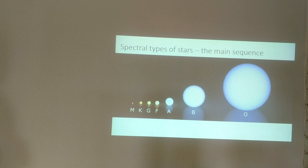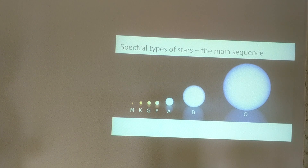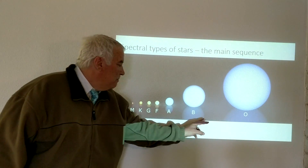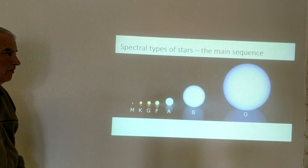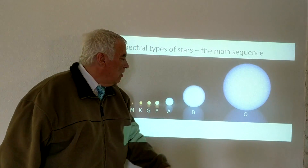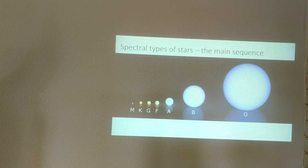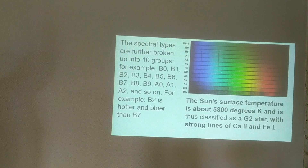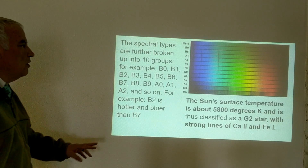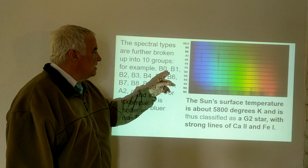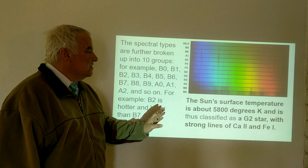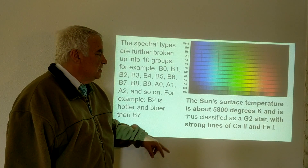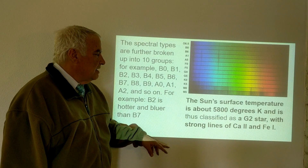Once we determine the spectral type, we can determine properties like the size of the star and its brightness. We can see a range from O, B, A, F, G, K, M — from bright, blue, and large to small, red, and faint. The groups can be broken down further like a decimal system: B0, B1, B2, and so on. The sun falls into this scheme at G2, at about 5,800 degrees Kelvin.